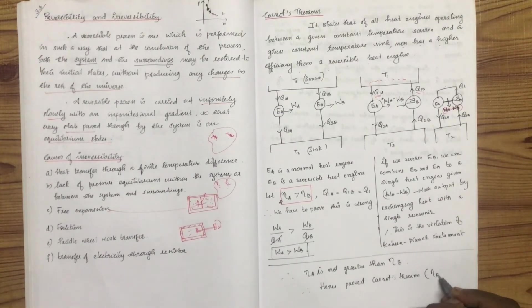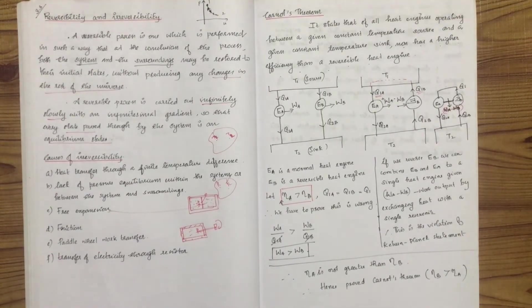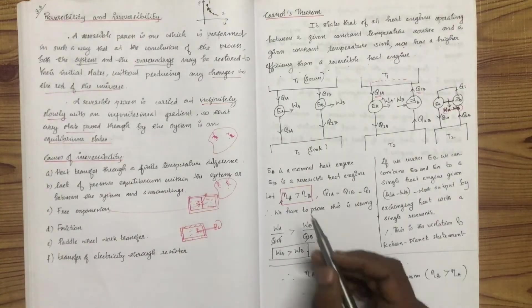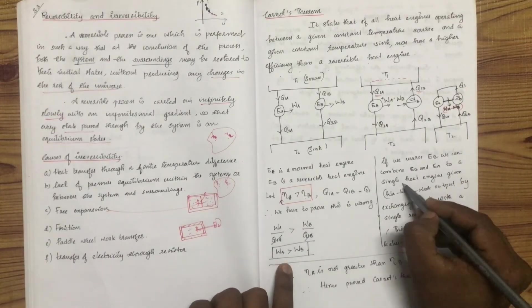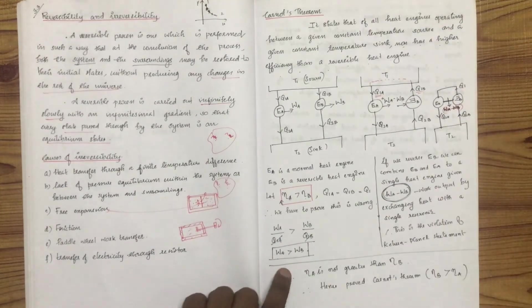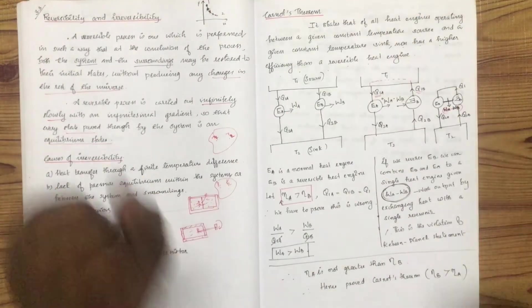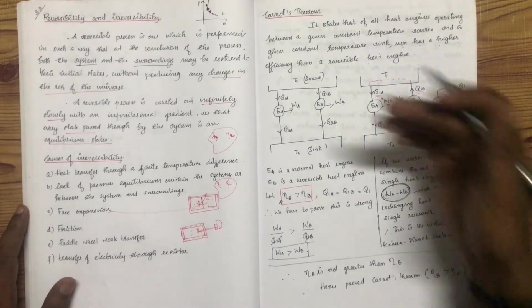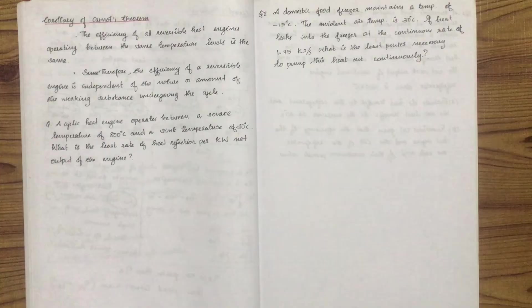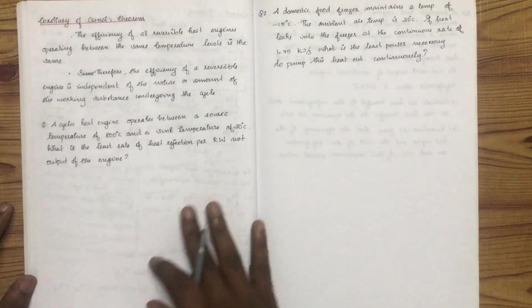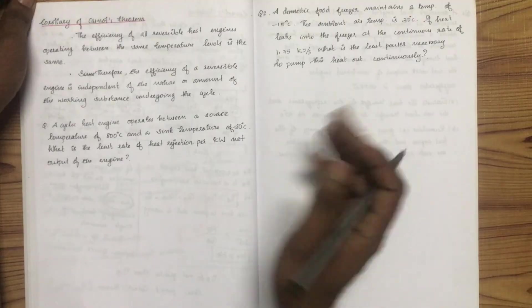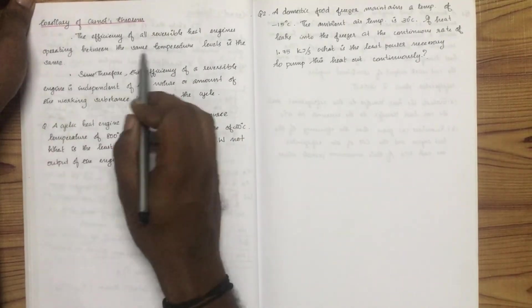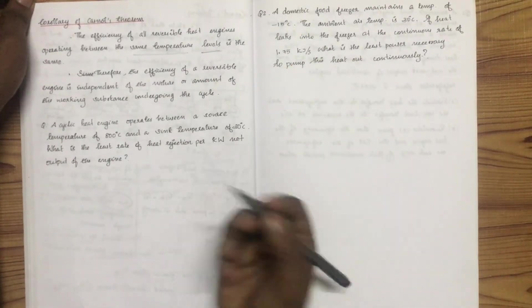Carnot's Theorem: the reversible heat engine. This is a violation of the Kelvin-Planck statement. Corollary of Carnot's Theorem: if we use a few reversible heat engines, all reversible heat engines operating between the same temperature levels have the same efficiency.